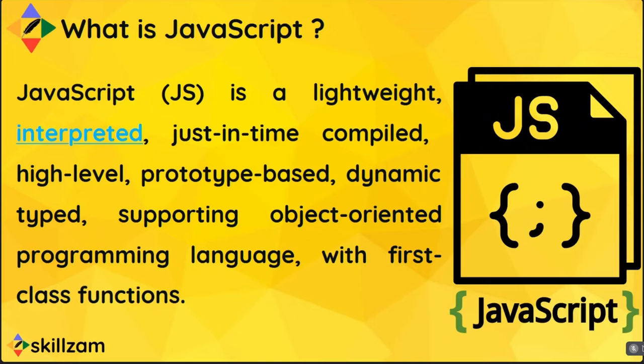There is also a section in the JavaScript notes where we discuss in tabular format the difference between interpreted and just-in-time or compiled programming languages — you can check that for yourself. In summary, understand that it is not compiled — it is an interpreted programming language, like Python.